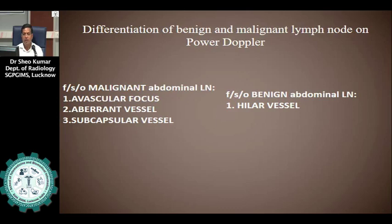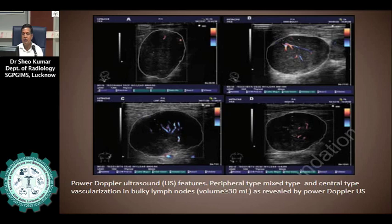Differentiation of benign and malignant lymph nodes on power Doppler: points in favor of a malignant abdominal lymph node are avascular foci, aberrant vessels, and subcapsular vessels. The point in favor of benign abdominal lymph nodes is hilar vascularity. Power Doppler ultrasound shows peripheral type, mixed type, and central type vascularization in bulky lymph nodes.